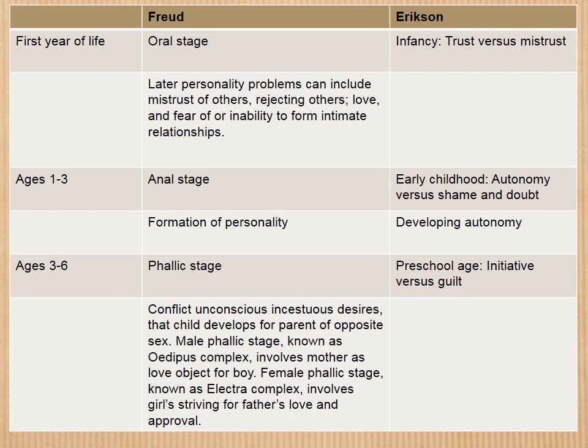Ages 18 months to 3 is the anal stage for Freud — the formation of personality in many ways. For Erikson this is called early childhood, characterized by autonomy versus shame and doubt, with autonomy meaning independence. If potty training is fairly successful — the child is not yelled at, screamed at, or punished for wetting the bed — they develop a sense of independence. Whereas if they are yelled at, screamed at, and punished, they develop a sense of shame and doubt, especially about their bodies.